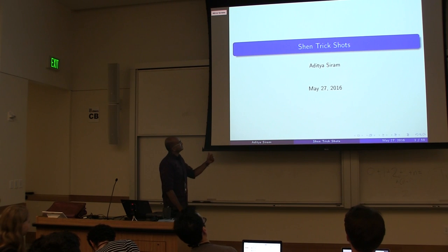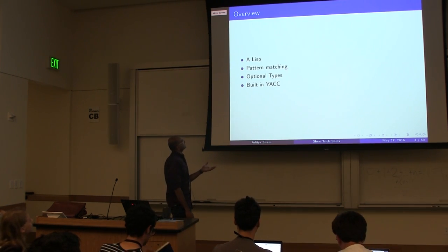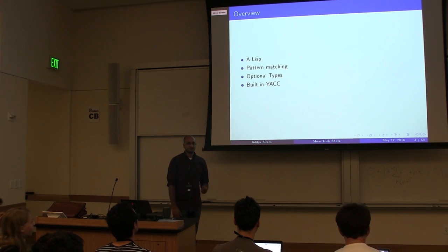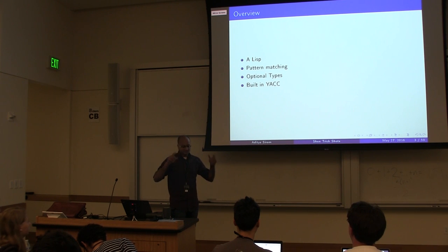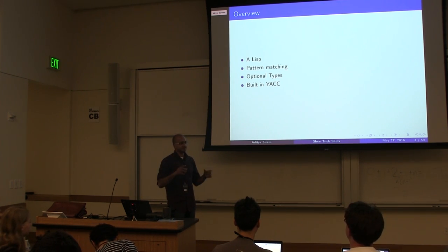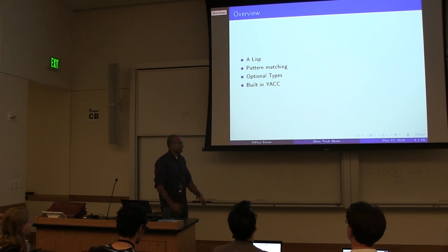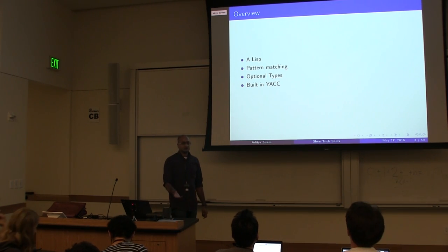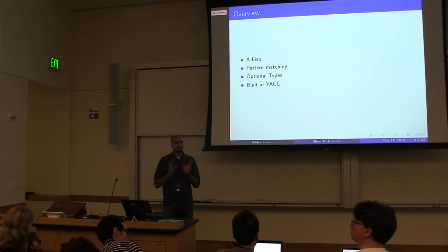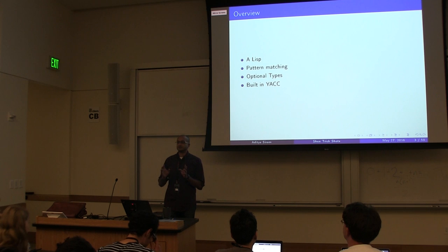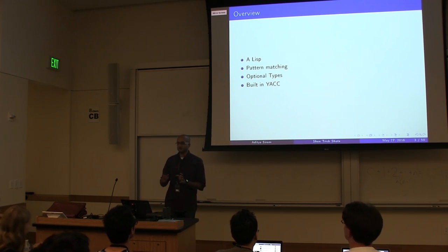Hi, I'm Dietsch. I'm here to talk about Shen. Shen is a Lisp, but it's a very different kind of Lisp than what you might be used to. All arguments are pattern matched — you pass in a pattern that gets matched, not an S-expression. It really looks like ML, but it's a Lisp underneath. It has optional types, meaning you can turn off type checking, but the type system itself is the most flexible type system I have personally ever seen, especially compared to black-box type systems from ML-derived languages.